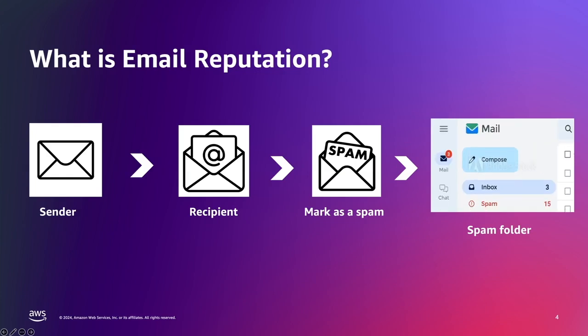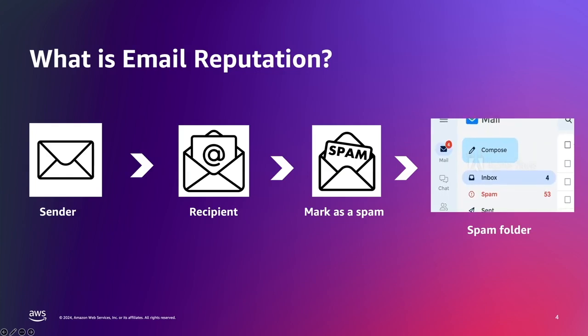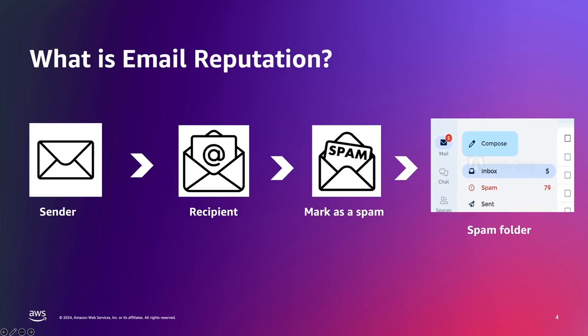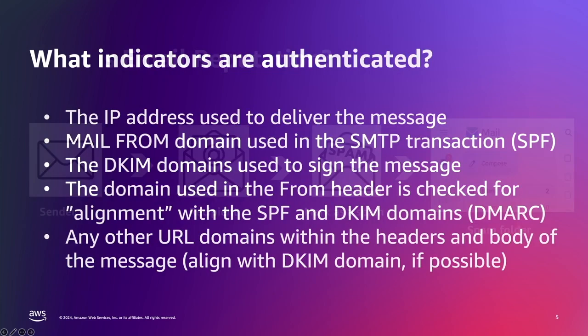When the sender's reputation indicates their users want fewer messages from them, the mailbox provider will start throttling or even blocking that sender's email. Mailbox providers assess each sender based on observing various indicators within the messages they receive. The reputation of each of these indicators is evaluated by mailbox providers in isolation as well as in combination with the other indicators to determine how messages should be handled. The best way to isolate your reputation is to authenticate each indicator so that the mailbox provider knows you are responsible for the indicators they use to assess reputation.